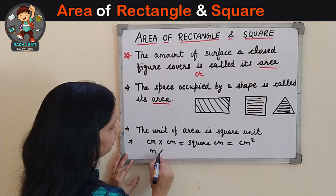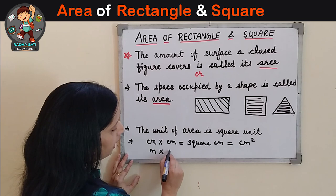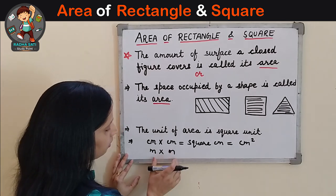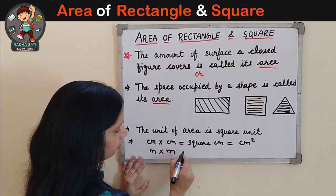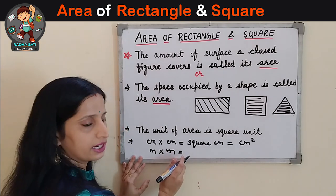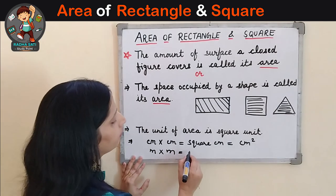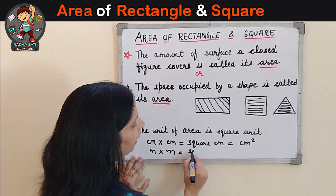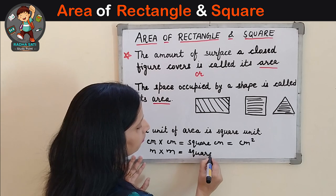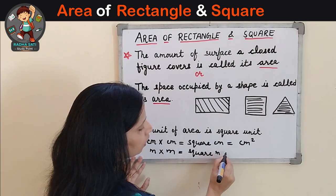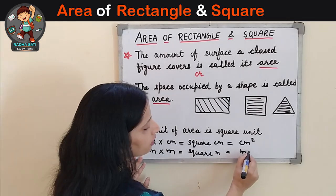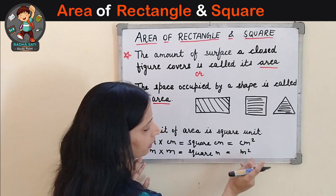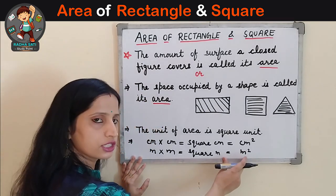If we multiply meter and meter — suppose the dimensions are given in meter — then meter multiplied by meter will give us square meter, or it can be written as meter squared. We can write it either way.